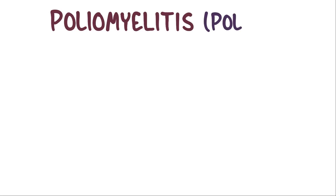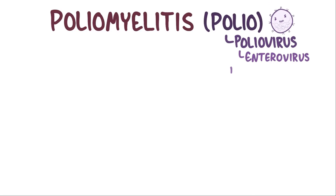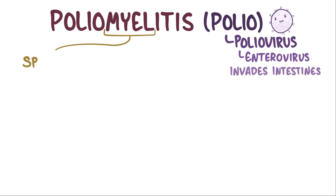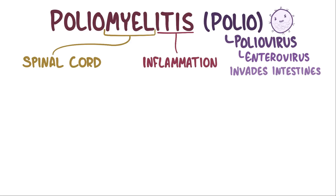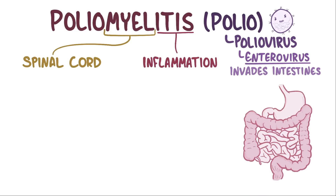In poliomyelitis, also called polio, 'polio' refers to the poliovirus, which is an enterovirus that invades the intestines, and 'myel' refers to the spinal cord, which is affected in the disease, and 'itis' refers to inflammation. So poliomyelitis is an enteroviral disease that first enters the body through the intestines, but then spreads and causes nerve injury in the spinal cord.